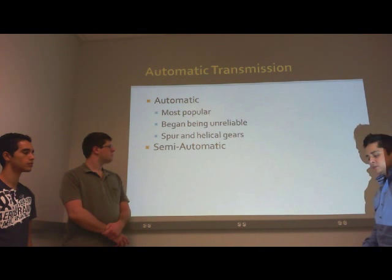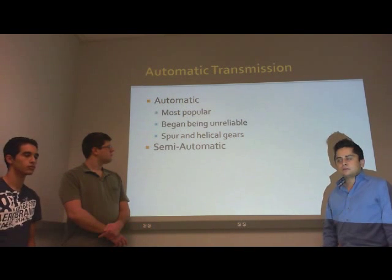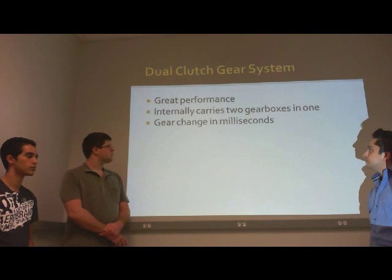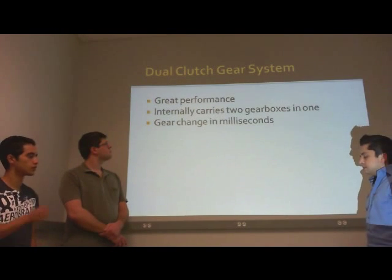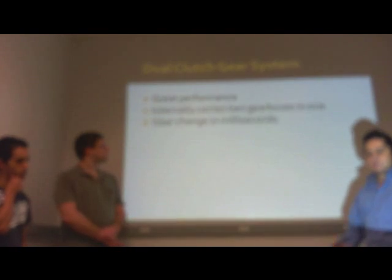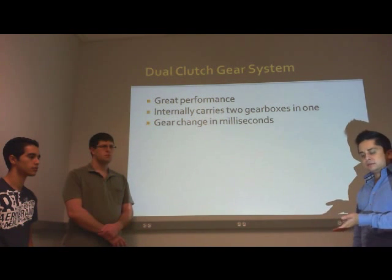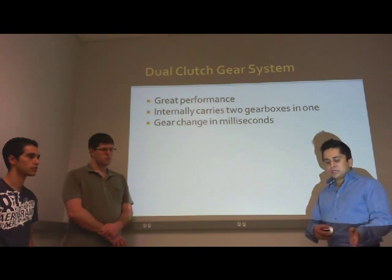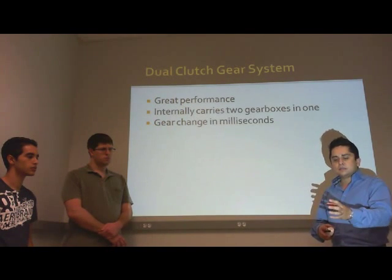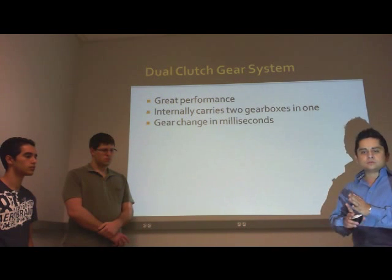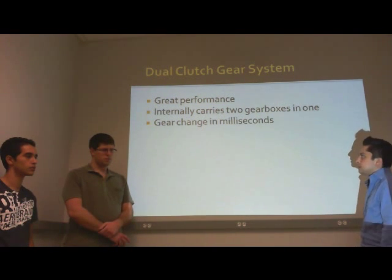The semi-automatic transmission gives the driver the opportunity to select the gears, while the transmission also handles shifts automatically — but the driver can override that. The dual clutch gear system is the most current gear system. Essentially it is two gearboxes in one housing: one gearset handles odd-numbered gears and the other handles even-numbered gears. Because it has two clutches working very close together, gear changes happen within milliseconds.